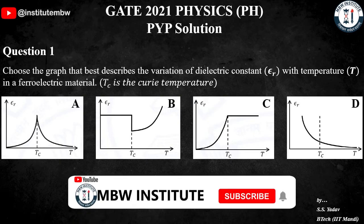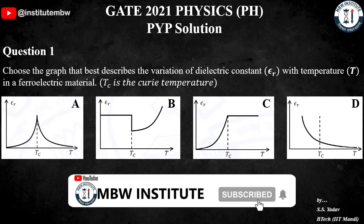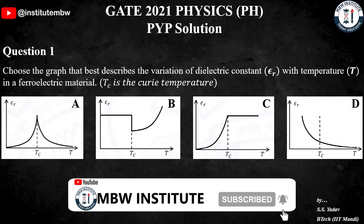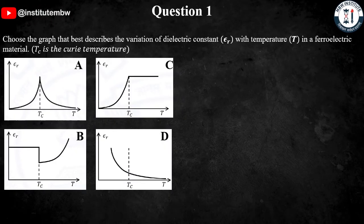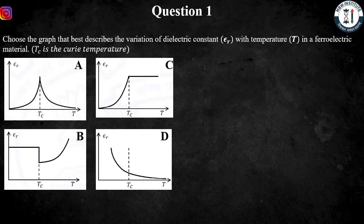In this video we will solve question 1 from GATE 2021 Physics. Let's get started. We have to choose the graph that best describes the variation of dielectric constant with temperature in a ferroelectric material, where TC is the Curie temperature.